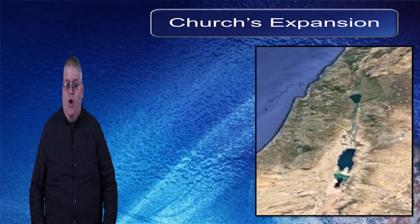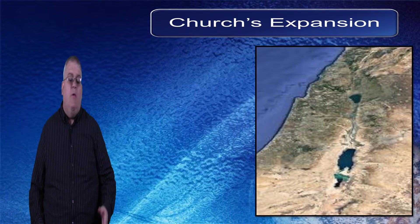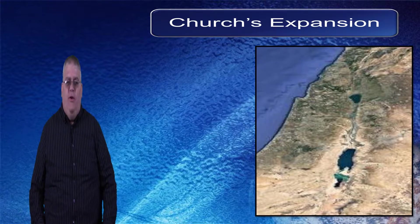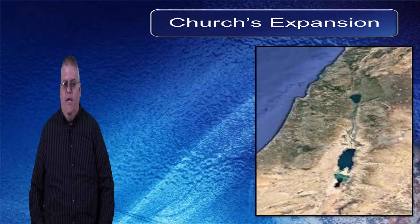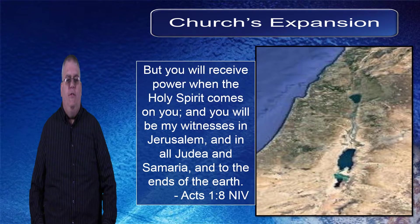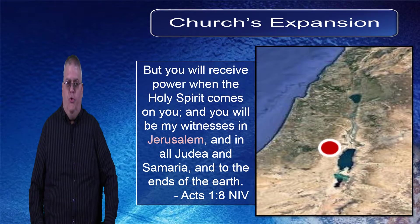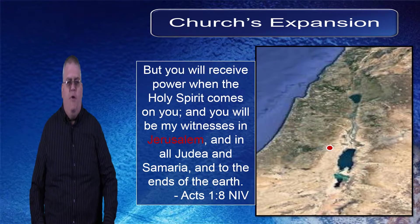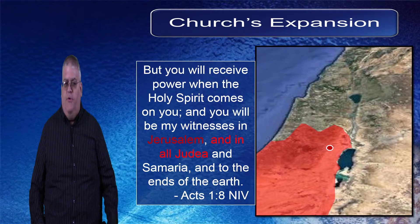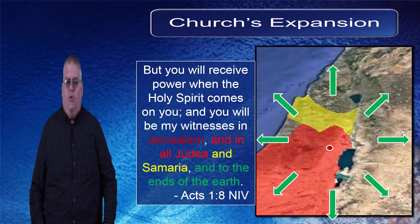Now let's look at the geography of the physical expansion of the church after the resurrection of Jesus. We'll start by noticing the outline given by Jesus himself in Acts 1:8. According to this verse, which played out accurately in history, the church would start in Jerusalem, and then it would spread to all Judea — the entire territory surrounding Jerusalem — and all Samaria, the next neighboring territory, and then it would spread to the ends of the earth.